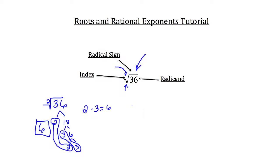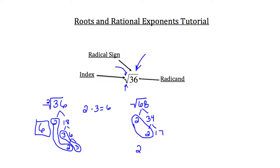Now let's try the square root of 68. Since the index is 2, we can only pull out numbers that come in pairs. Using prime factorization: 68 breaks down to 2 × 34, and 34 breaks down into 2 × 17. We have a pair of 2's, so we pull out one 2. We only have one 17, so it stays under the radical. The square root of 68 simplifies to 2√17.